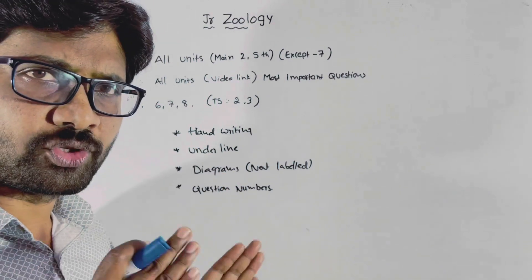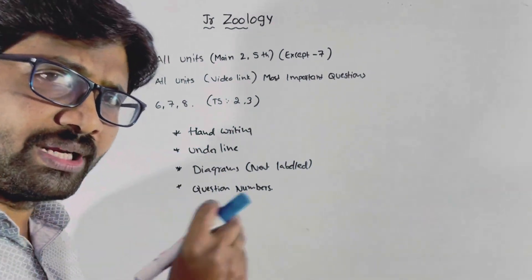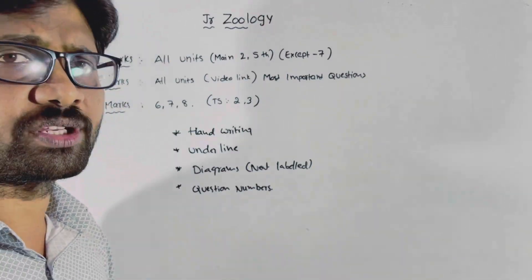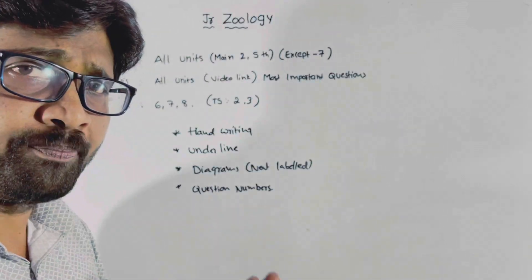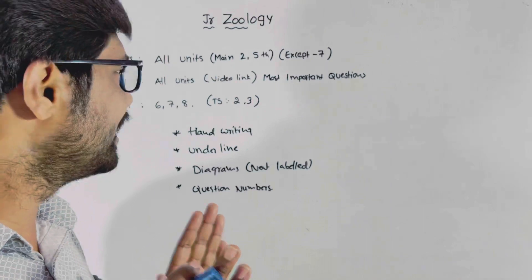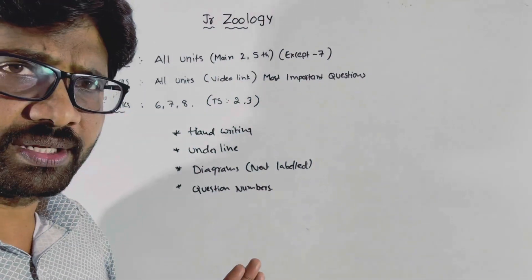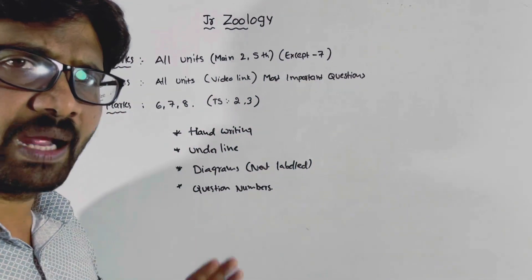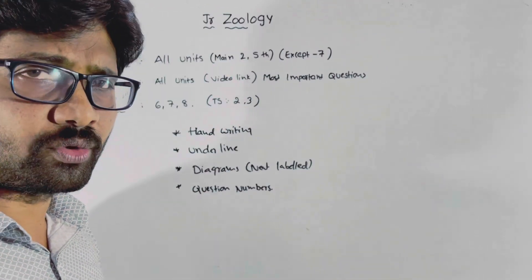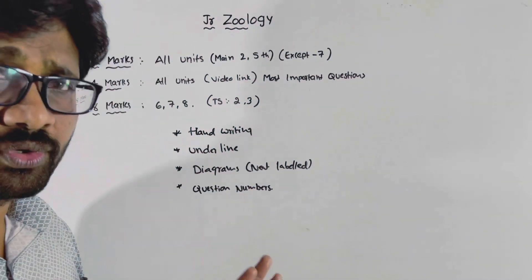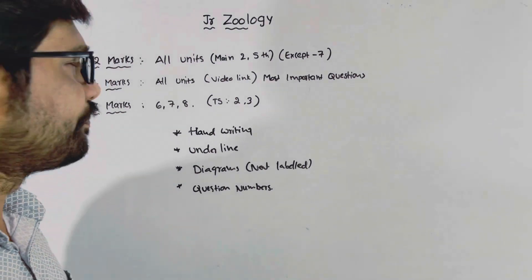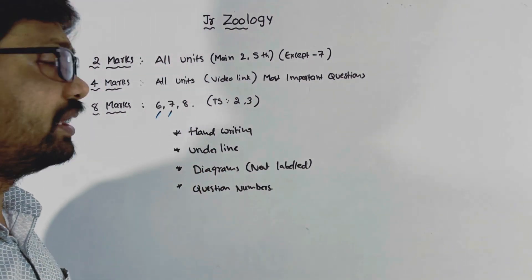Please check the description for the important questions list. First, I will go through the list of all units and the list of important questions. For 8-mark questions, look at the point of flow — chapters 6, 7, and 8 are the most important. For Energy Flow, you can choose from chapters 6, 7, and 8 to prepare your 8-mark answers.